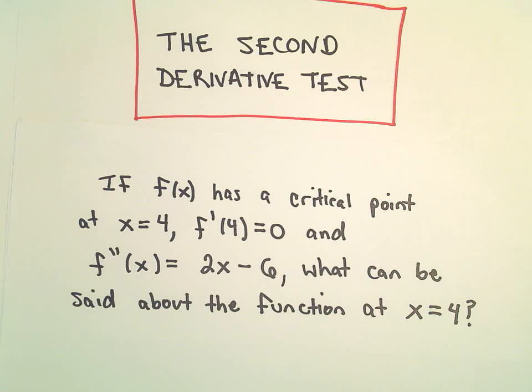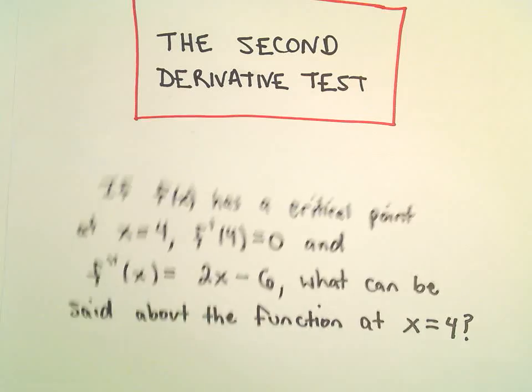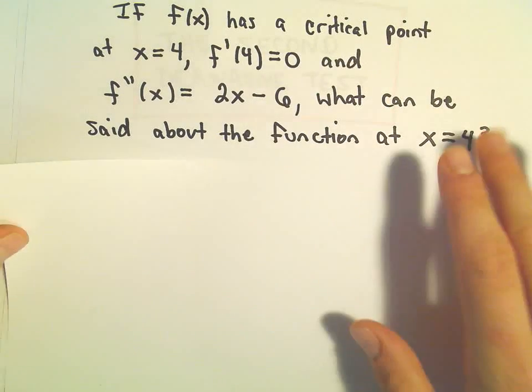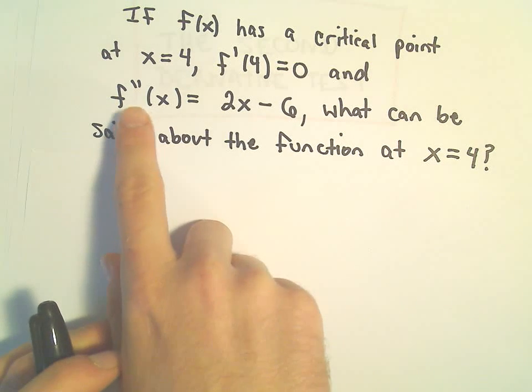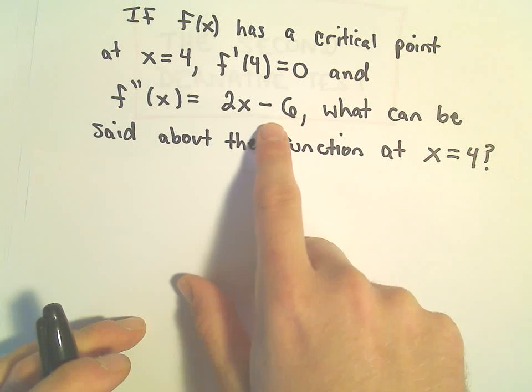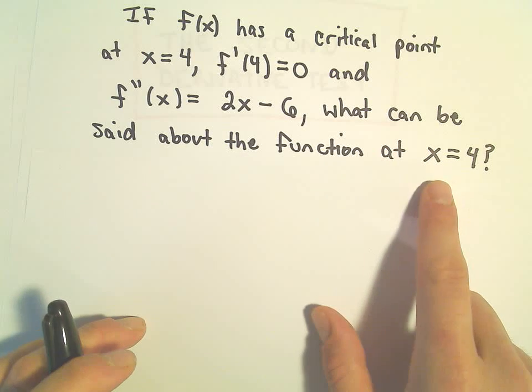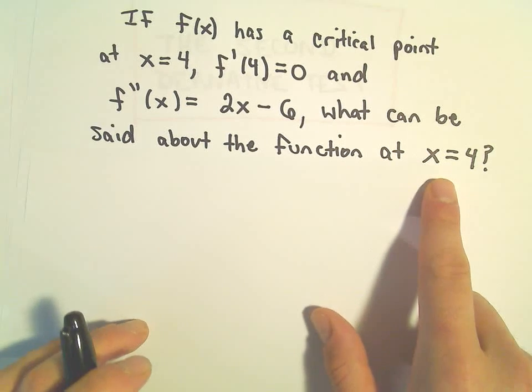All right, so just another question here related to the second derivative test. Suppose we've got a critical point at x equals 4 and the derivative equals 0. We want to know if the second derivative is 2x minus 6, what can we say about the function, what occurs at x equals 4?